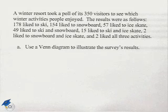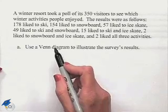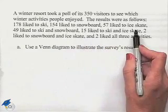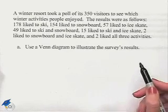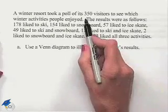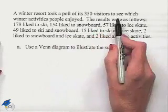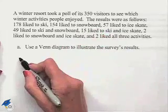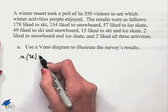We want to use a Venn diagram to illustrate the survey's results. In order to create a Venn diagram we notice we're going to have three different sets: the set of people who like to ski, the set who like to snowboard, and the set who like to ice skate. But to create the diagram we need to know the intersections. So let's start by listing the cardinality of our sets. The winter resort took a poll of 350 visitors — that is our universal set, so the cardinality of the universal set equals 350.